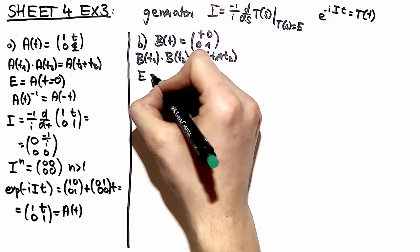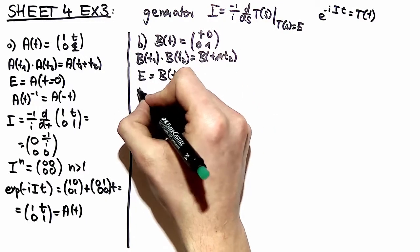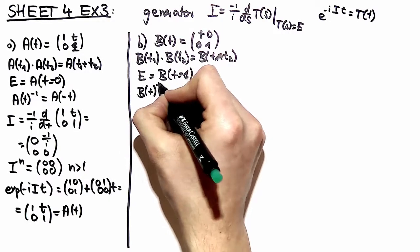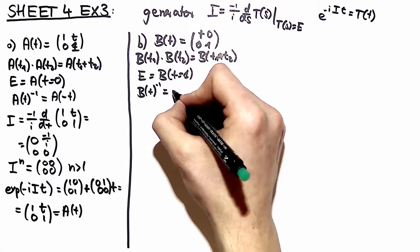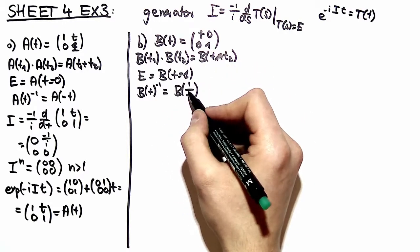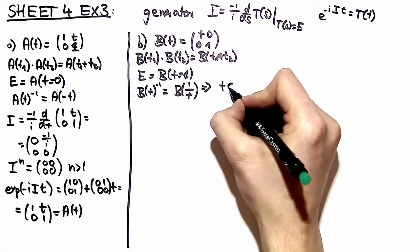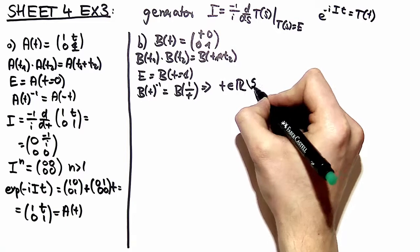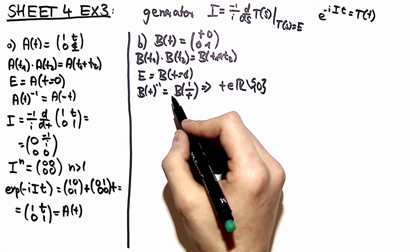The identity element is the one where you take t equal to 1 and the inverse of b of t, and here comes the interesting part when looking at that equation, the inverse of b of t is 1 over t as the parameter. As a conclusion you can say that t is in the set of all real numbers but 0 because this is of course not defined for t equal to 0.